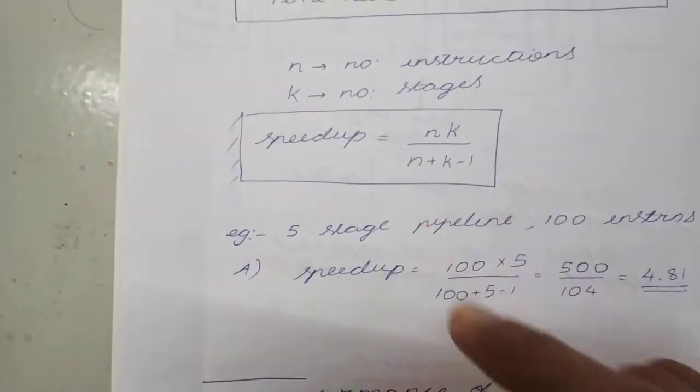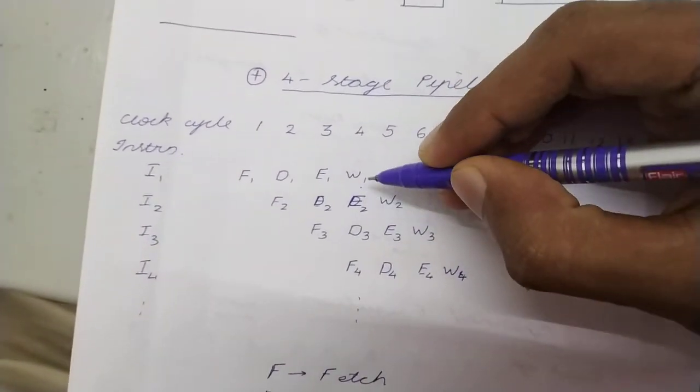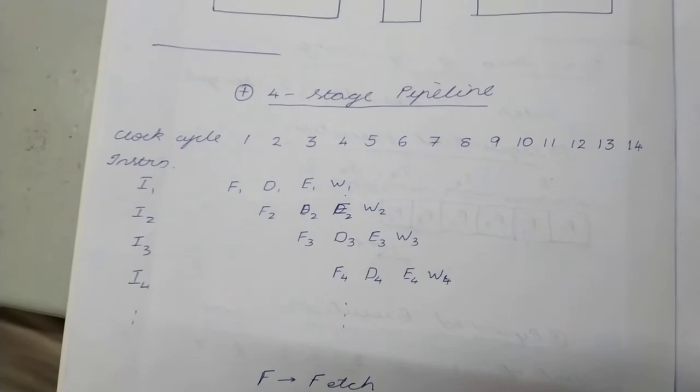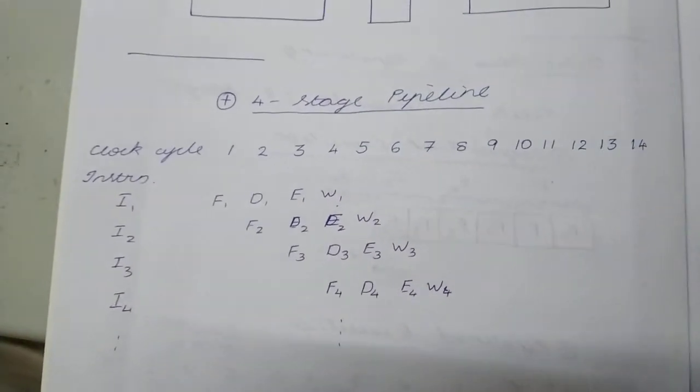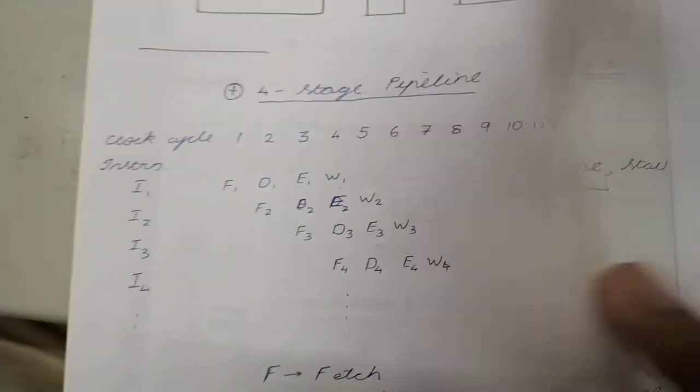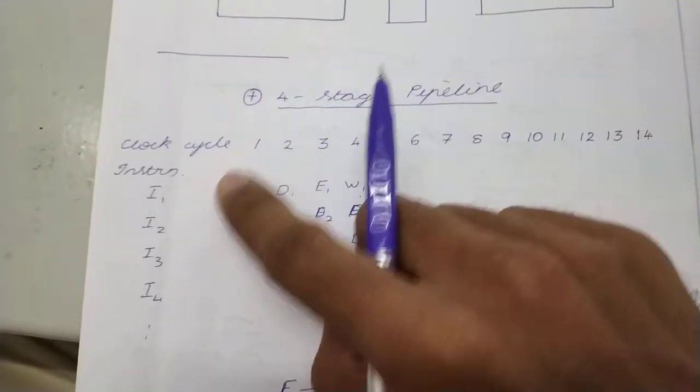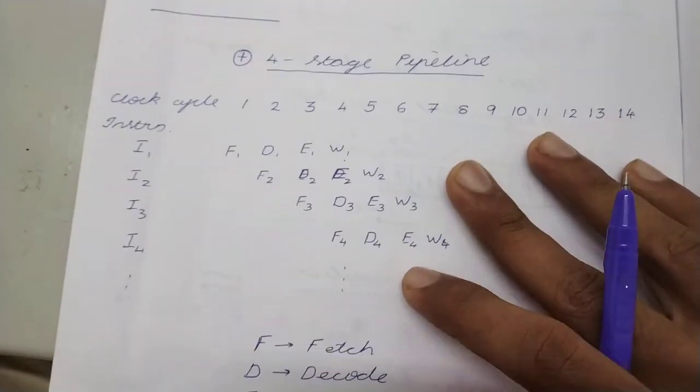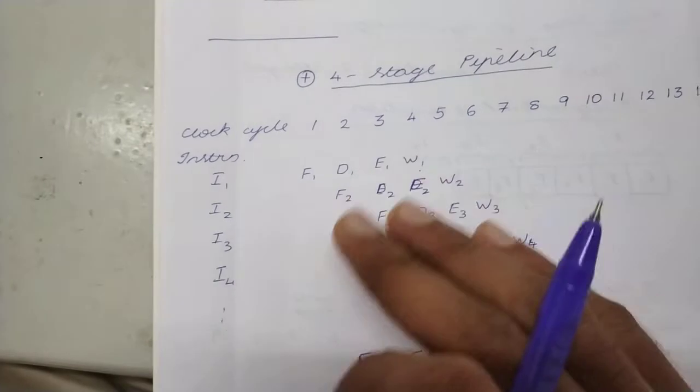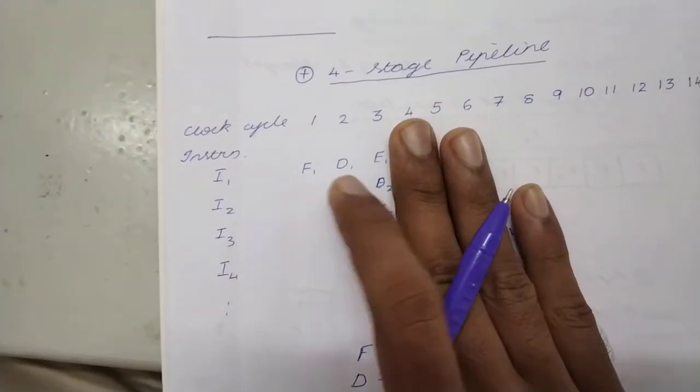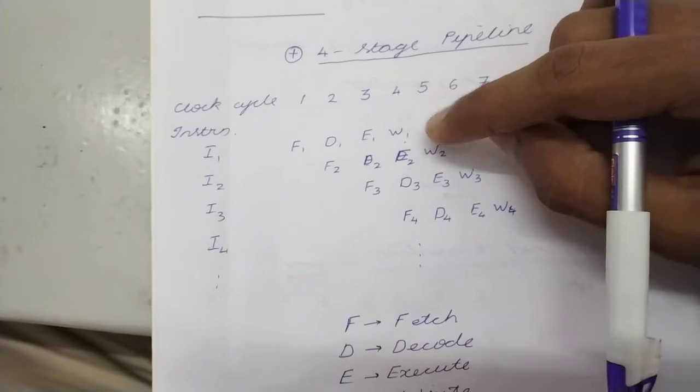Now the n plus k minus 1. How this comes is we already know that from the 4th clock cycle onwards, one instruction is getting executed in every clock cycle. But before that, we are having, like for the fetch 1, D1, and E1, we are having no instruction that is getting executed. That also should be counted while we are counting the number of clock cycles. So for that we take k minus 1. If there is a 4-stage pipeline, then 4 minus 1, that means 3, is here. 3 clock cycles are taken here.